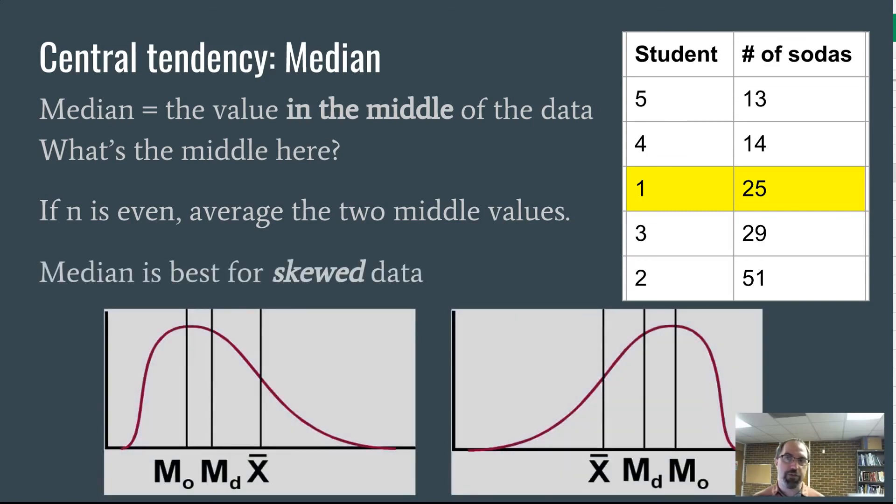The median is best for skewed data. If you look at this data set, we've got 13 and 14, 25 and 29. That's kind of all clustered together, teens and 20s. And then we've got 51 at the end. That would be a statistical outlier. And that outlier, the skewed data, this value that in this graph is all the way out here, that is a data point that can pull the mean too far in one direction.